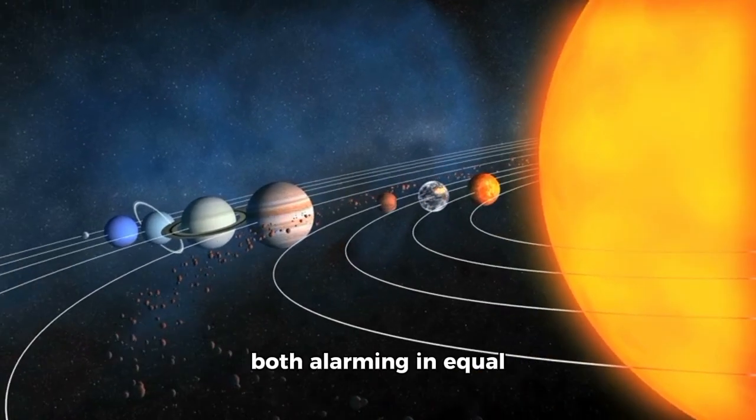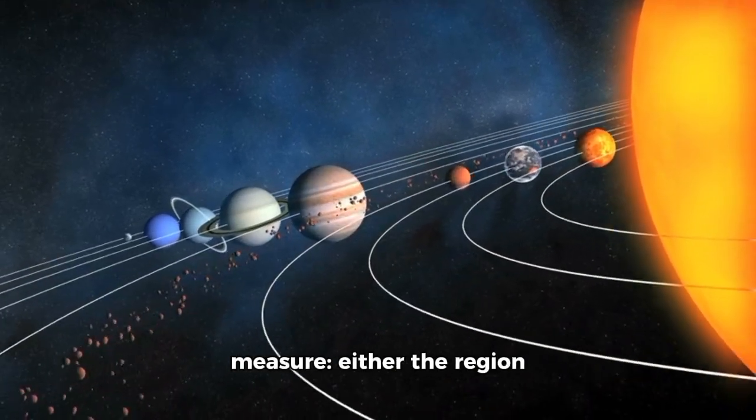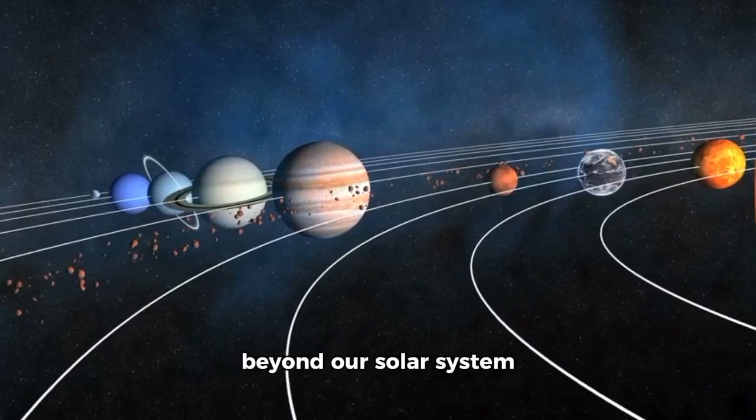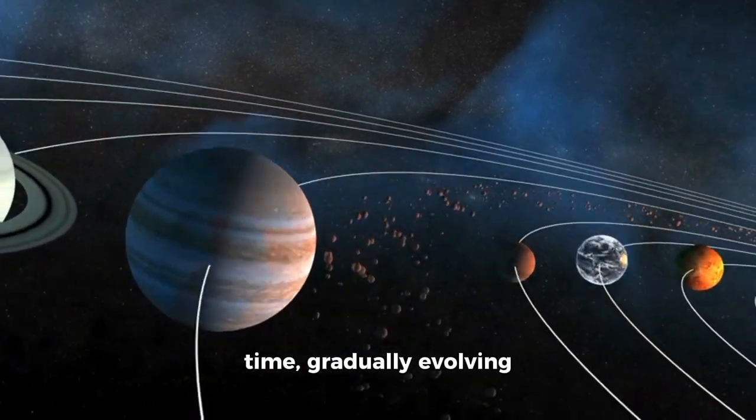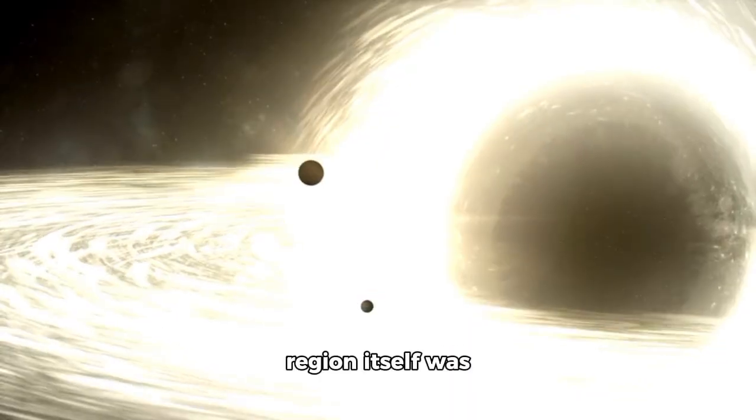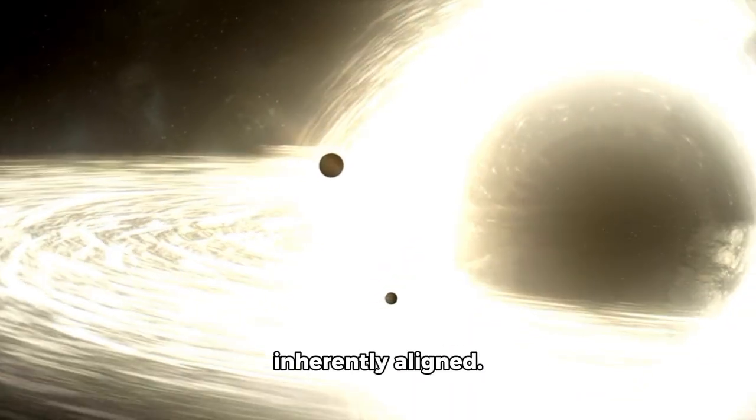Two possibilities emerged, both alarming in equal measure. Either the region beyond our solar system had been shaped and bent by the sun's outflow over time, gradually evolving into alignment, or the region itself was inherently aligned.